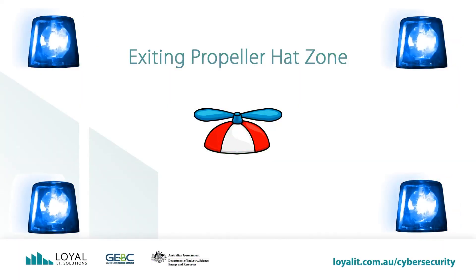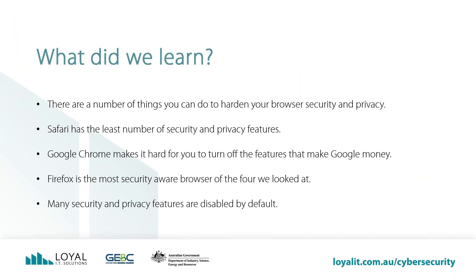Let's exit the propeller hat zone and wrap up the video. What did we learn? There are a number of things you can do to harden your browser security and privacy. Safari has the least number of security and privacy features. Google Chrome makes it hard for you to turn off the features that make Google money. Firefox is the most security-aware browser of the four we looked at. Many security and privacy features are disabled by default, typically because it may impact on the user experience.